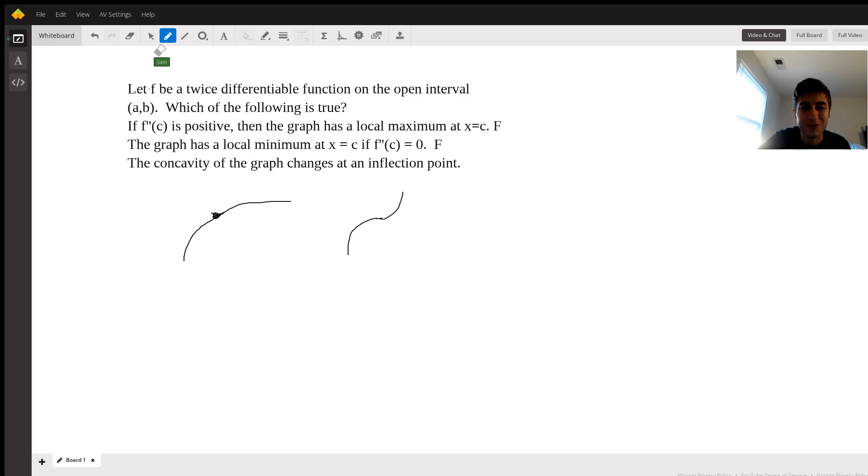So this is sort of a half true, half false one, really depending on what your definition of inflection point is. But I would say that since you can in fact have a point on the graph where the concavity or the second derivative can be zero, yet the concavity does not change, I would say that this is false as well.